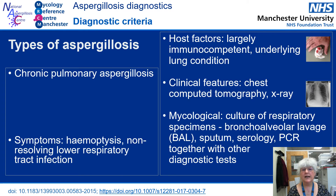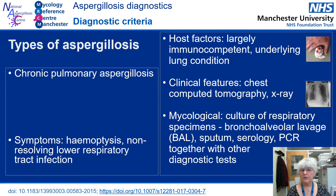Looking at the diagnostic guidance for chronic pulmonary aspergillosis, the mycological tools are broadly similar to those used for invasive aspergillosis, except that these patients are usually immunocompetent. An important difference is that sputum culture and sputum Aspergillus PCR are now also available as tests whose results are significant for this condition, because these patients are able to produce sputum, sometimes in copious amounts. At this centre, we also use serological tests to monitor patient progress.